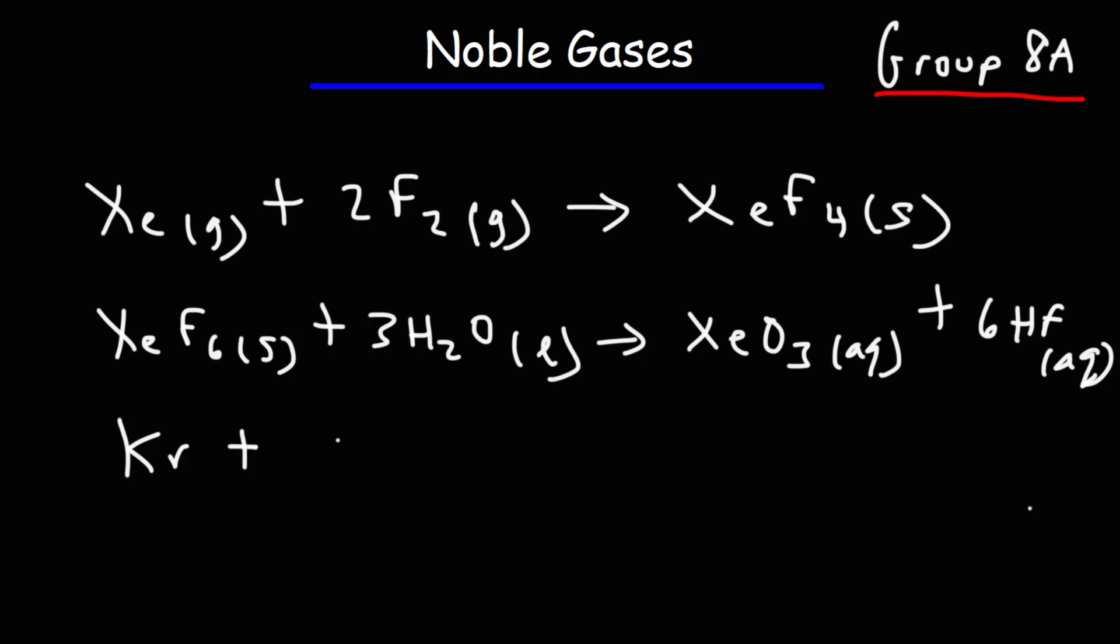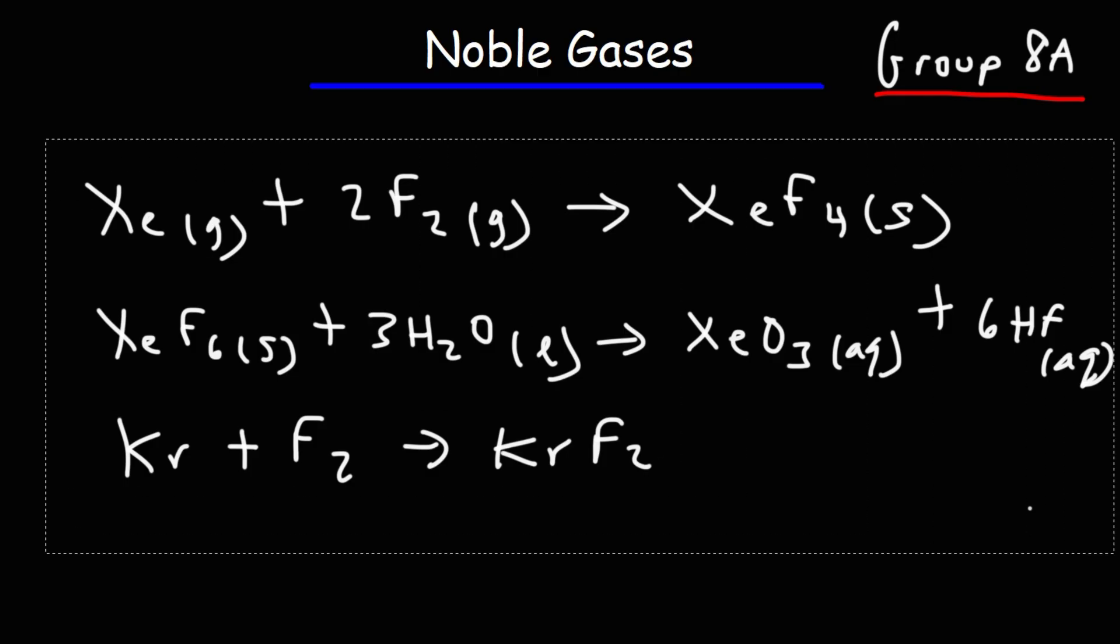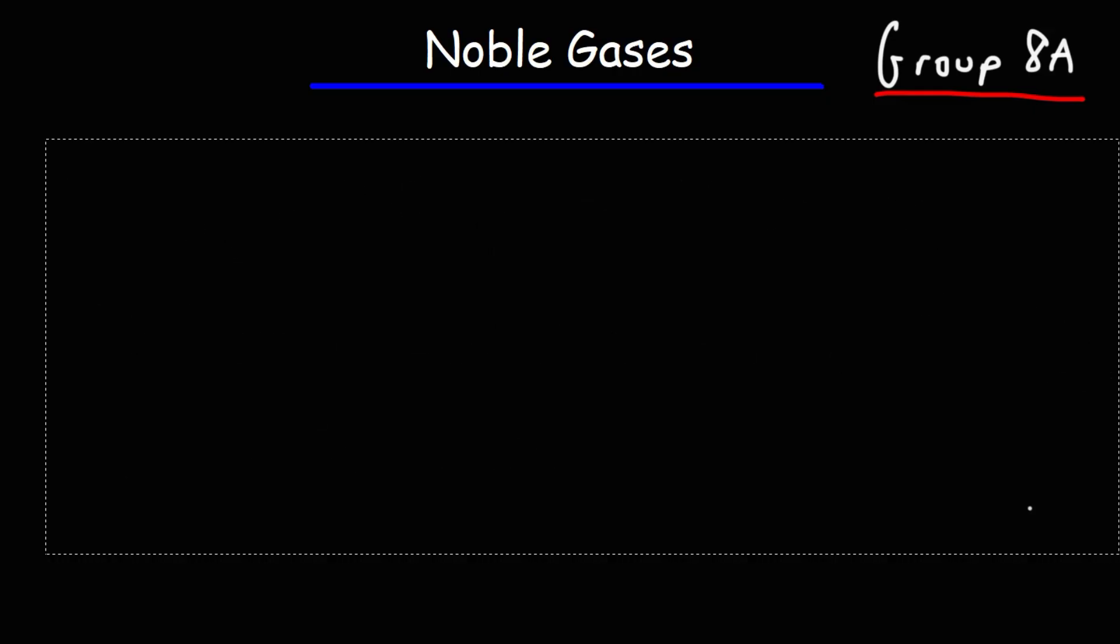Krypton can also react with fluorine to make this compound, krypton difluoride. So the noble gases, for the most part, they're not truly inert. They can react, but not all of them react though. For the most part, they're fairly unreactive. It takes a very reactive molecule like fluorine to get them to participate in chemical reactions.